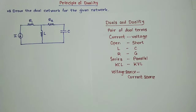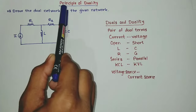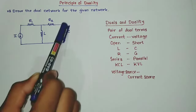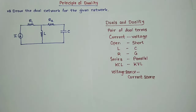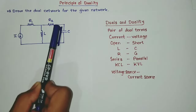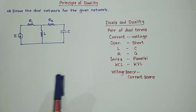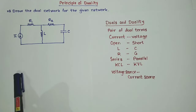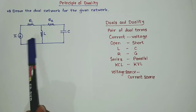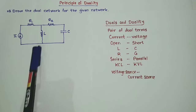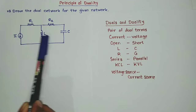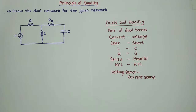Hello friends, welcome to our YouTube channel Electronics For You. In this video I am going to teach you the principle of duality. The question is: draw the dual network for the given network. Generally, dual means if we write the equation for this network and draw the dual, then write the equation for the dual network, and compare both solutions — the solution will be the same. That is called the dual.